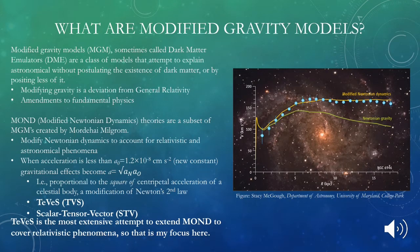What are modified gravity models? They are considered alternatives to general relativity, and sometimes they're called dark matter emulators. They're a class of models that try to explain astronomical phenomena that we see without postulating the existence of dark matter, or more recently, by postulating less of it.